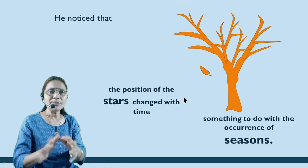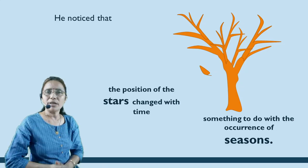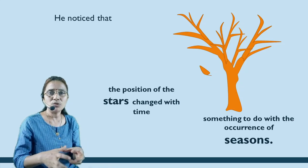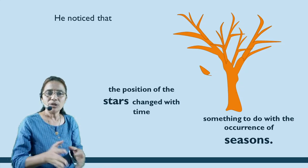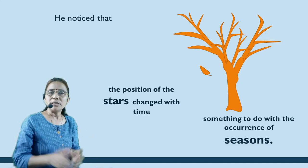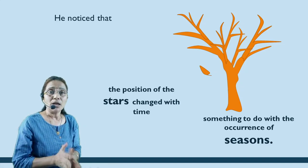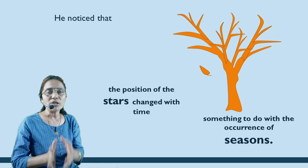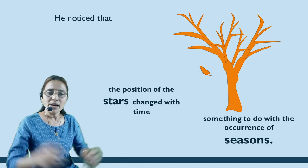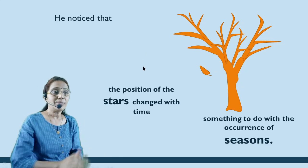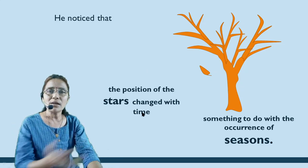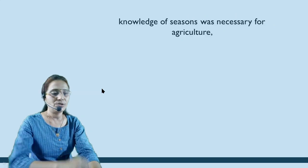Then they noticed that the position of stars changes with time and this is related to the season. We know that the earth revolves around the sun. As it revolves, sometimes our hemisphere is towards the sun and sometimes away from it, and in this way we experience the change in seasons. If the north pole is towards the sun, the northern hemisphere receives more light and experiences longer days. This is how seasons keep changing — rainy, winter, and summer — and these are related to the positions of stars.